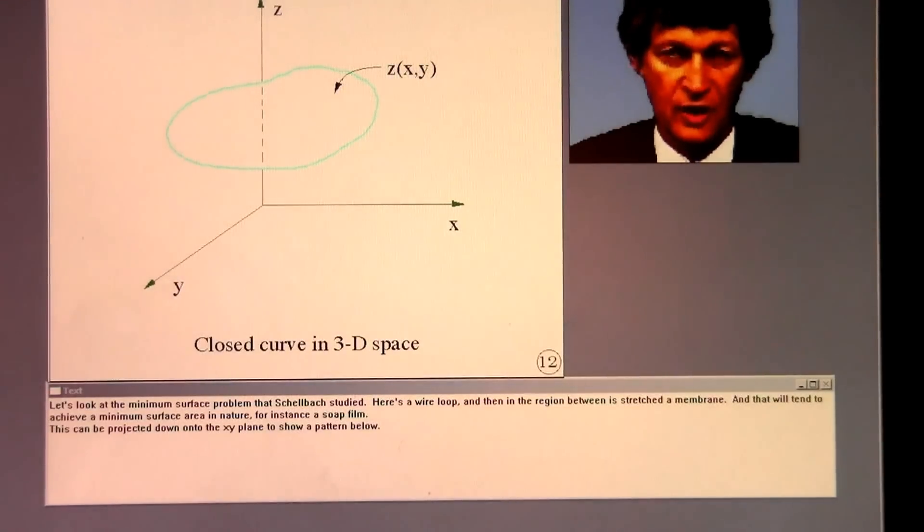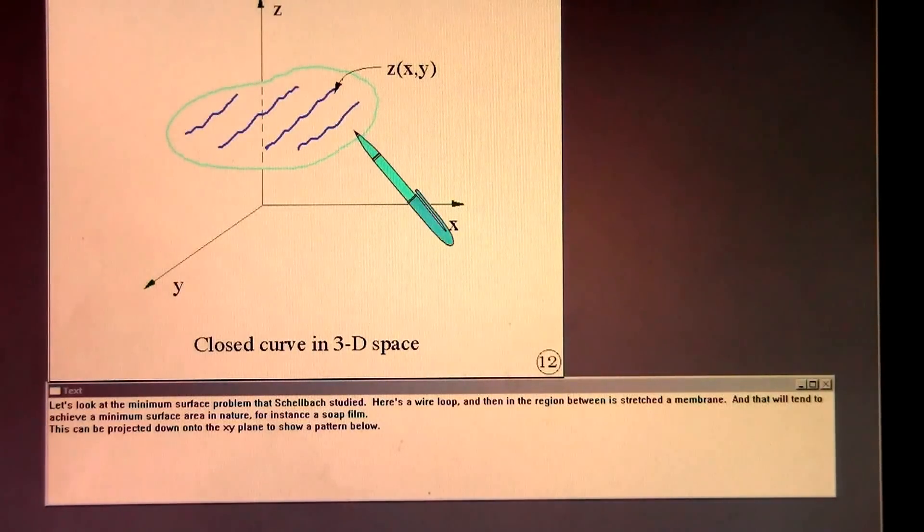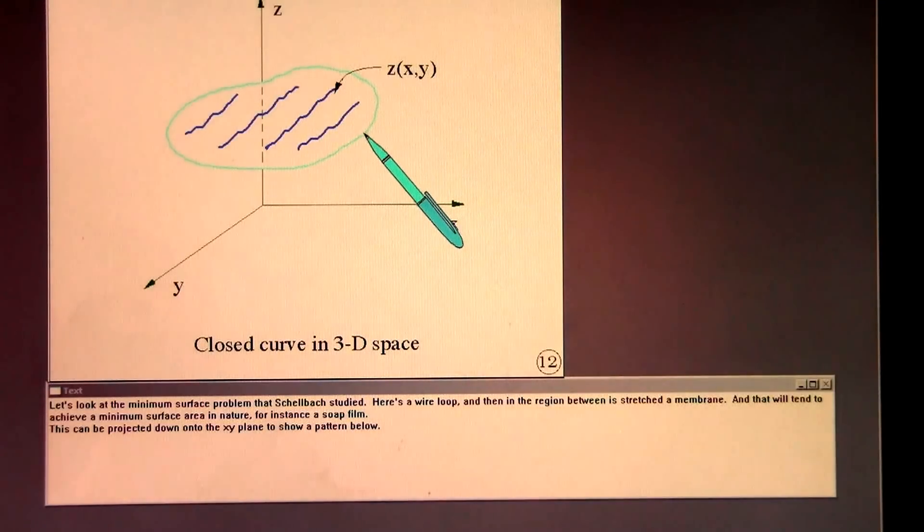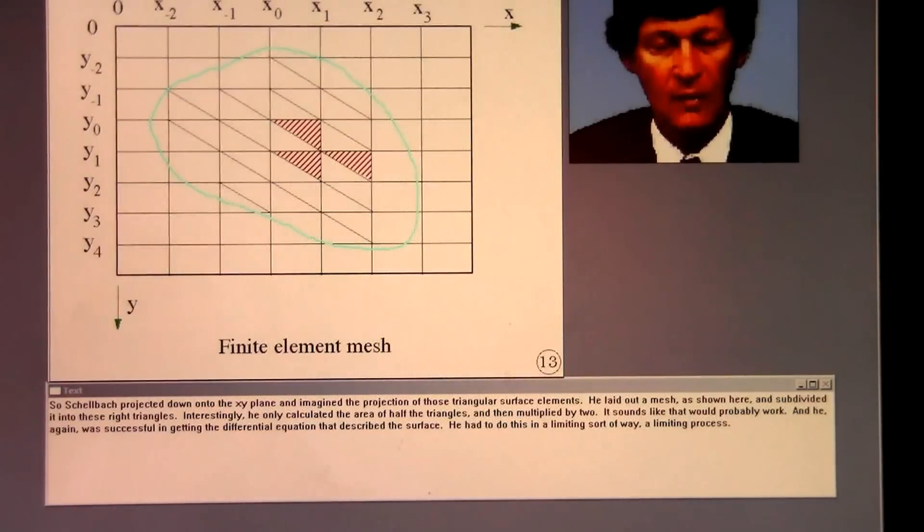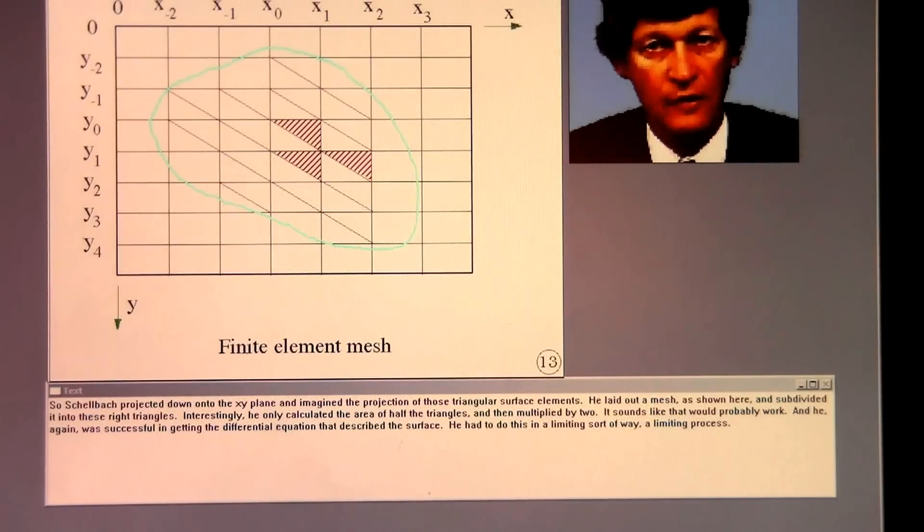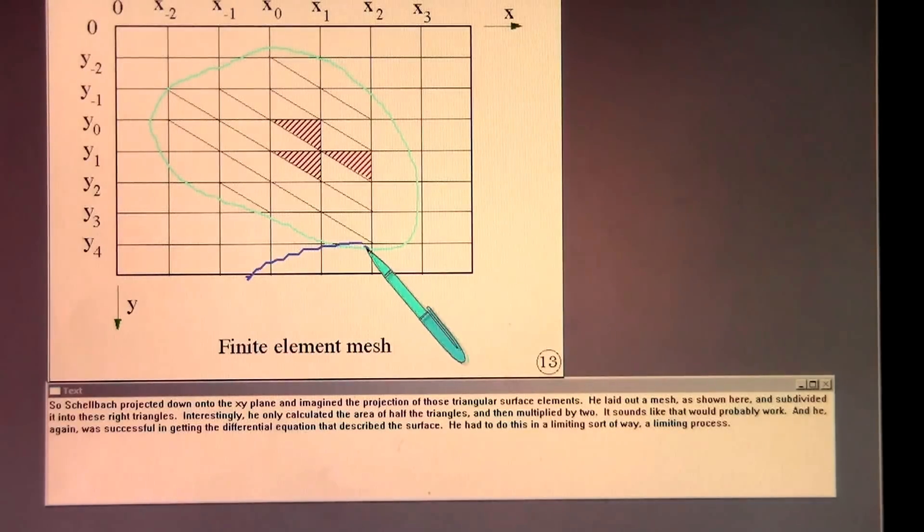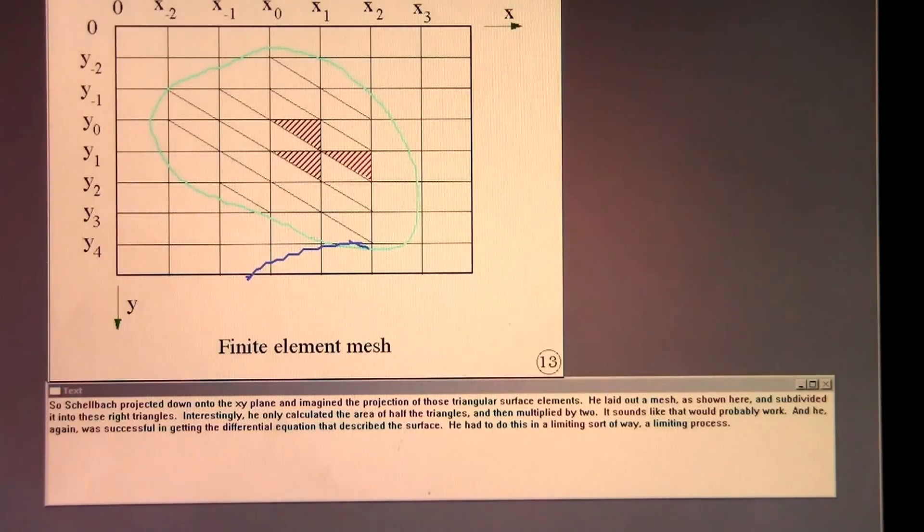Let's look at the minimum surface problem that Schellbach studied. Here's a wire loop and then in the region in between is stretched a membrane that will tend to achieve a minimum surface area in nature, for instance a soap film. This can be projected down onto the xy plane to show a pattern below. Schellbach projected down and imagined the projection of those triangular surface elements. He laid out a mesh and subdivided it into these right triangles. Interestingly, he only calculated the area of half of the triangles and then multiplied by two. He again was successful in getting the differential equation that described the surface.